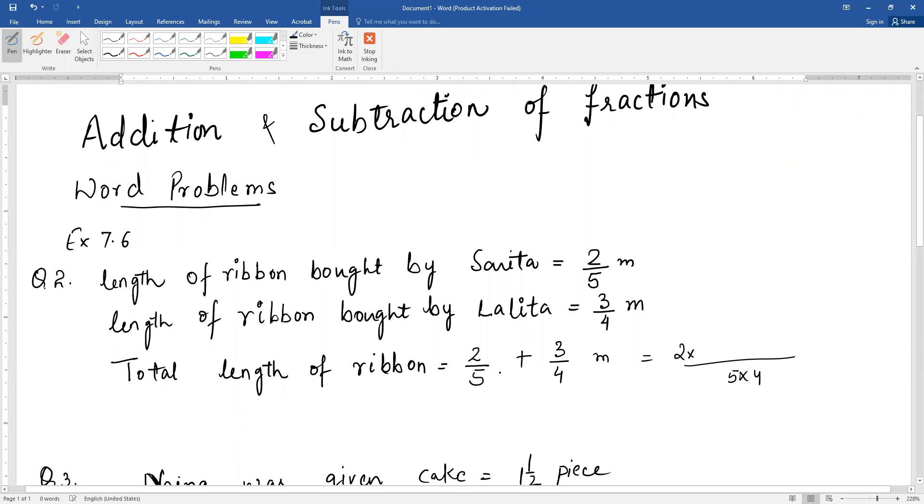Now multiply the numerators appropriately. We get 8 plus 15 divided by 20 meters. This gives you 8 plus 15, that is 23 by 20 meters.